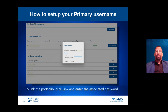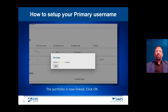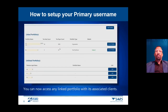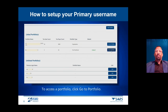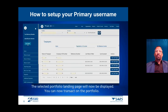To link a portfolio, click Link and enter the associated password, then click Submit. The portfolio is now linked — click OK. You can now access any linked portfolio with its associated clients. Please note that the same rights allocated to the portfolio will still apply. To access a portfolio, click Go to Portfolio. The selected portfolio landing page will now be displayed and you can transact on the portfolio.